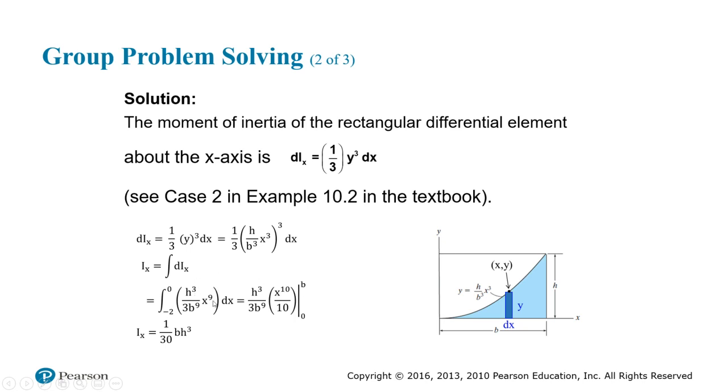Just use your inverse power rule. When you take the anti-derivative of X to the ninth, that's X to the 10 divided by 10. Evaluate. Don't have to worry about the zero term. Just evaluate at X equals B.